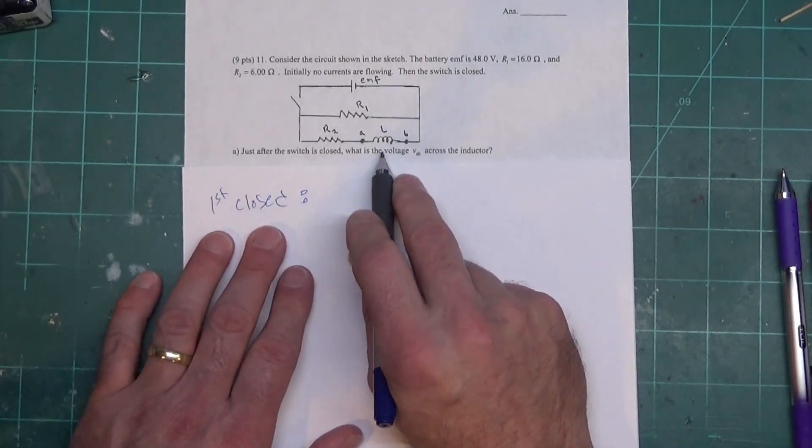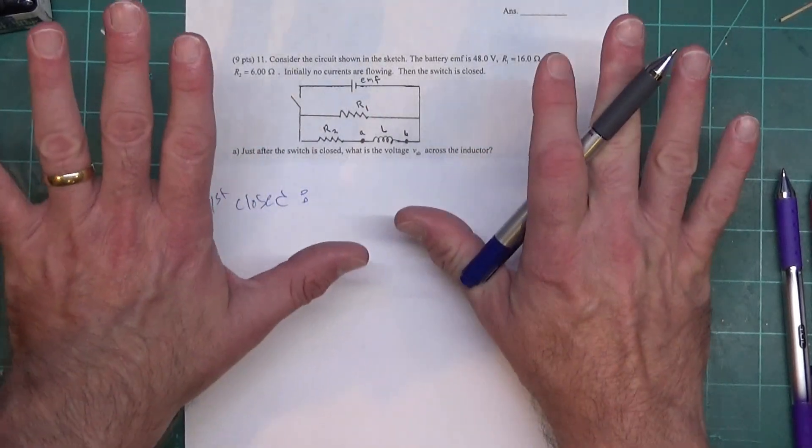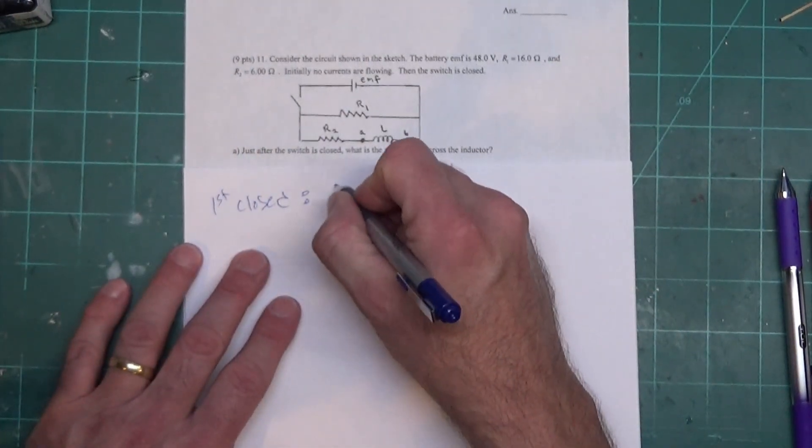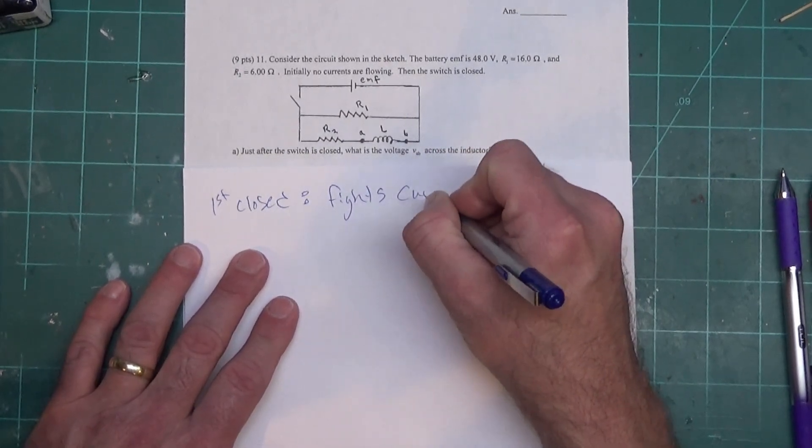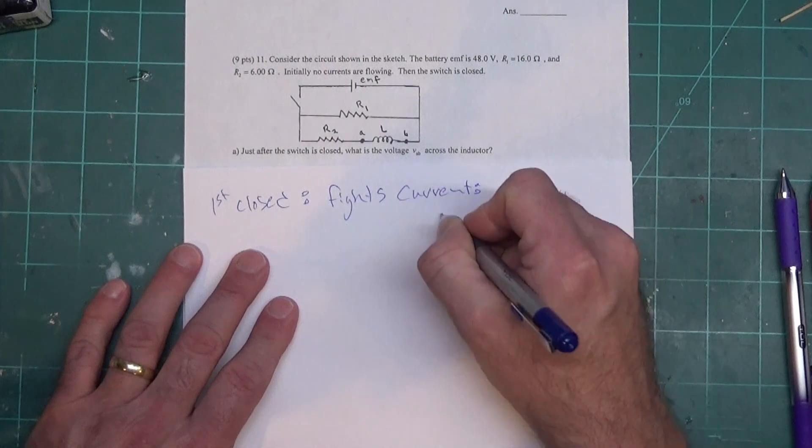So when the switch is first closed, a current starts flowing in here and the inductor goes, whoa, I'm not having that. So it fights the current and it acts like a gap.